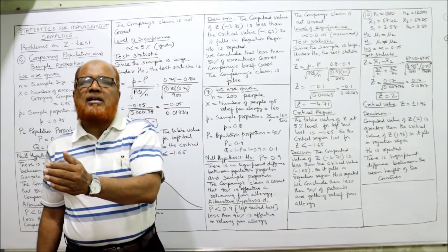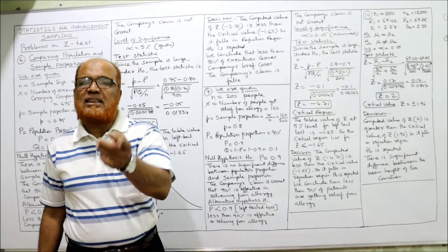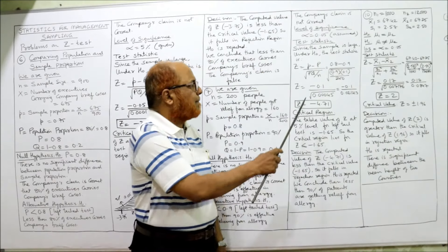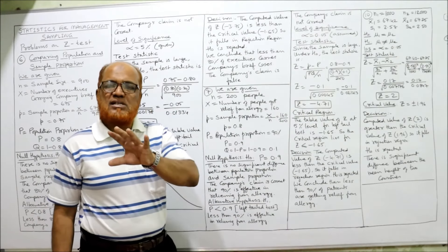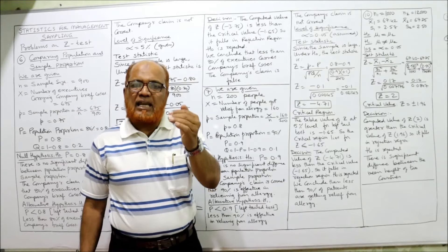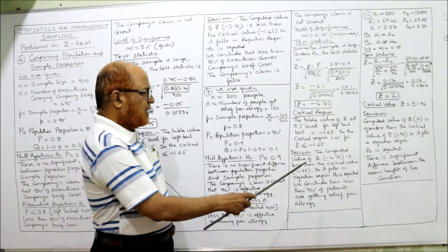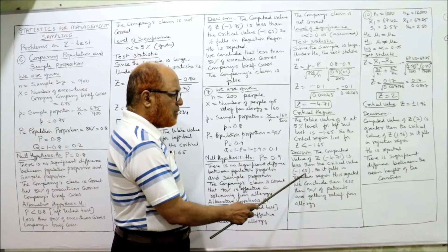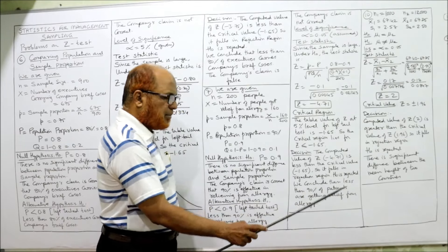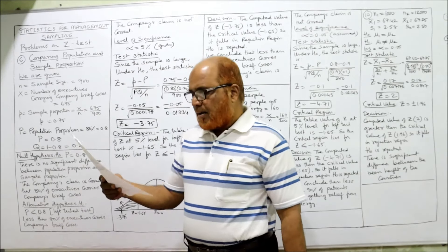Decision: computed value −4.71 is less than critical value −1.65, so it falls in the rejection region. Null hypothesis is rejected. We conclude that less than 90% of patients get relief from allergy — the company's claim is incorrect. This is the end of problem 7. Problems 8 and 9 will be covered in the next video.